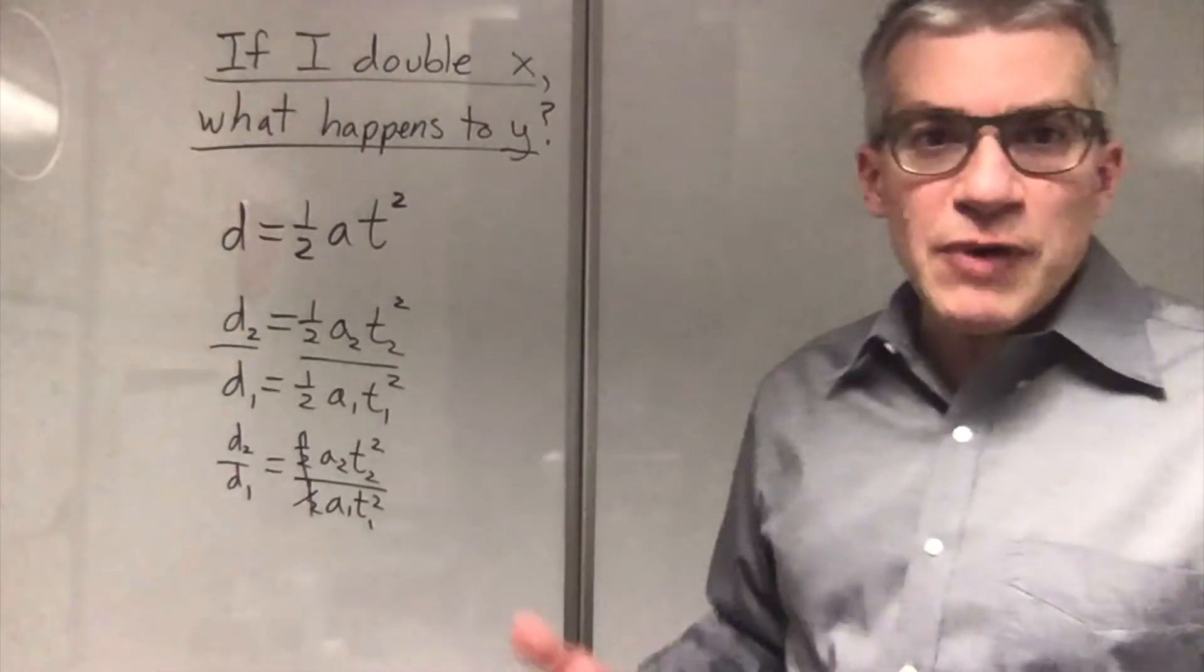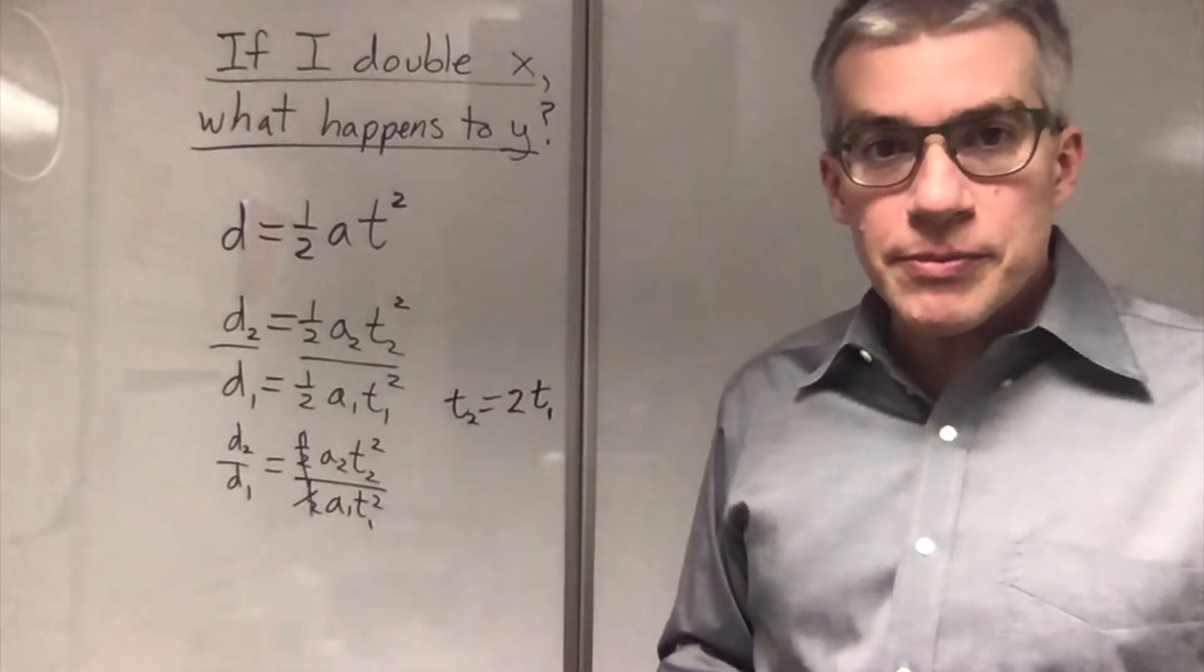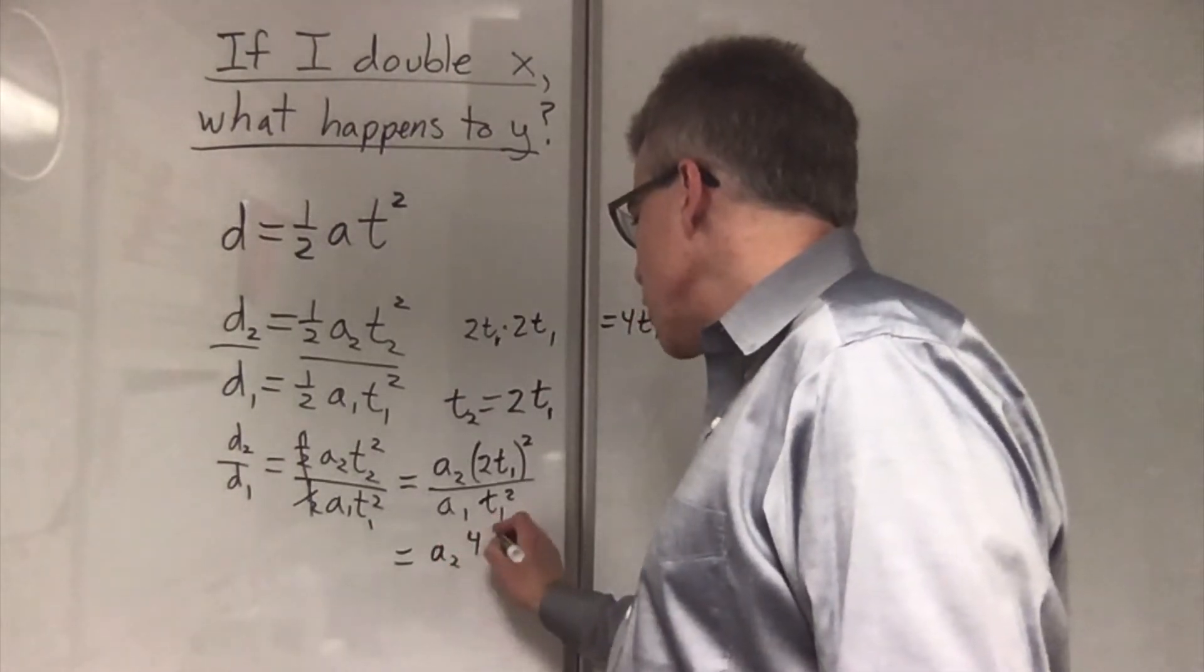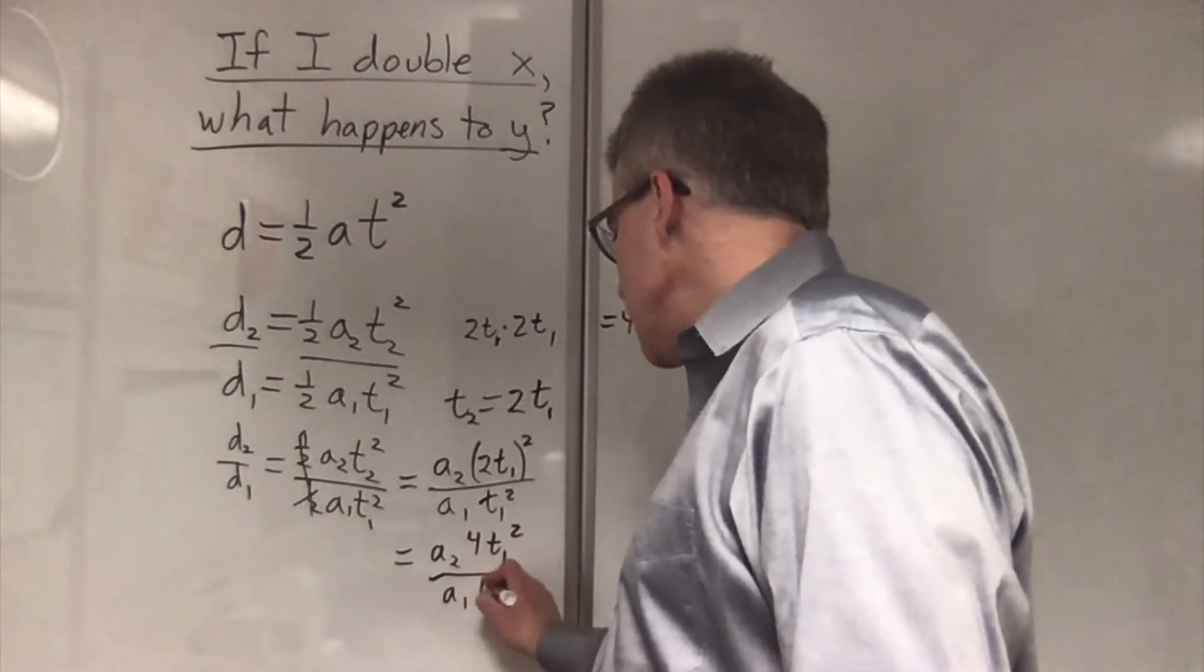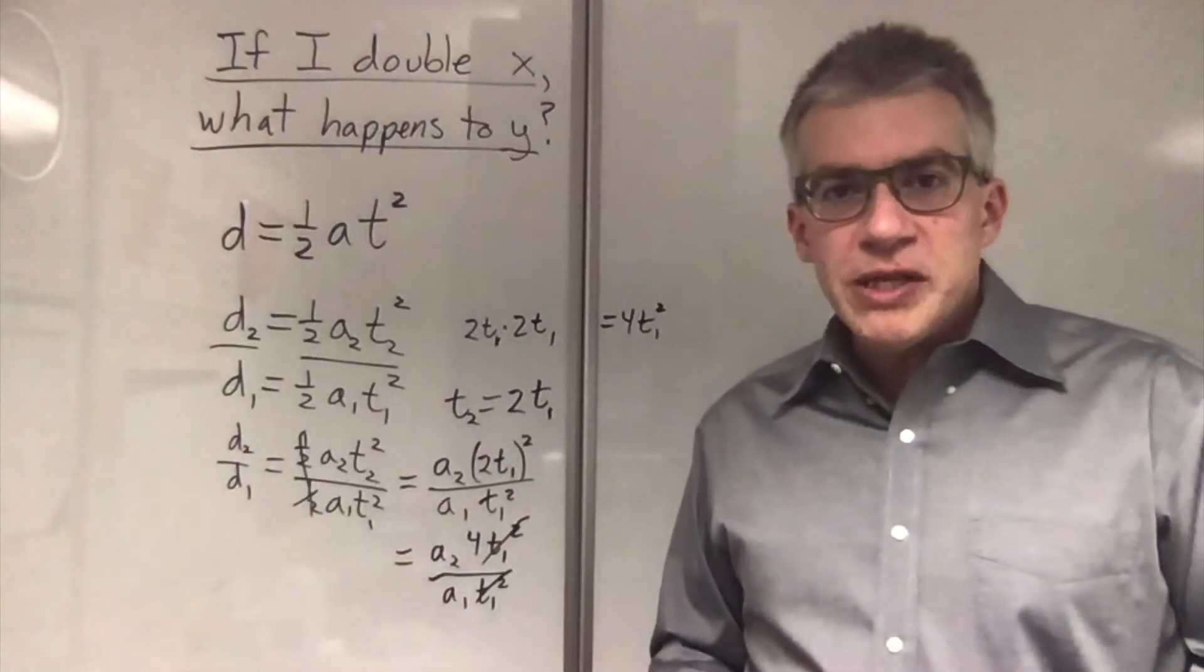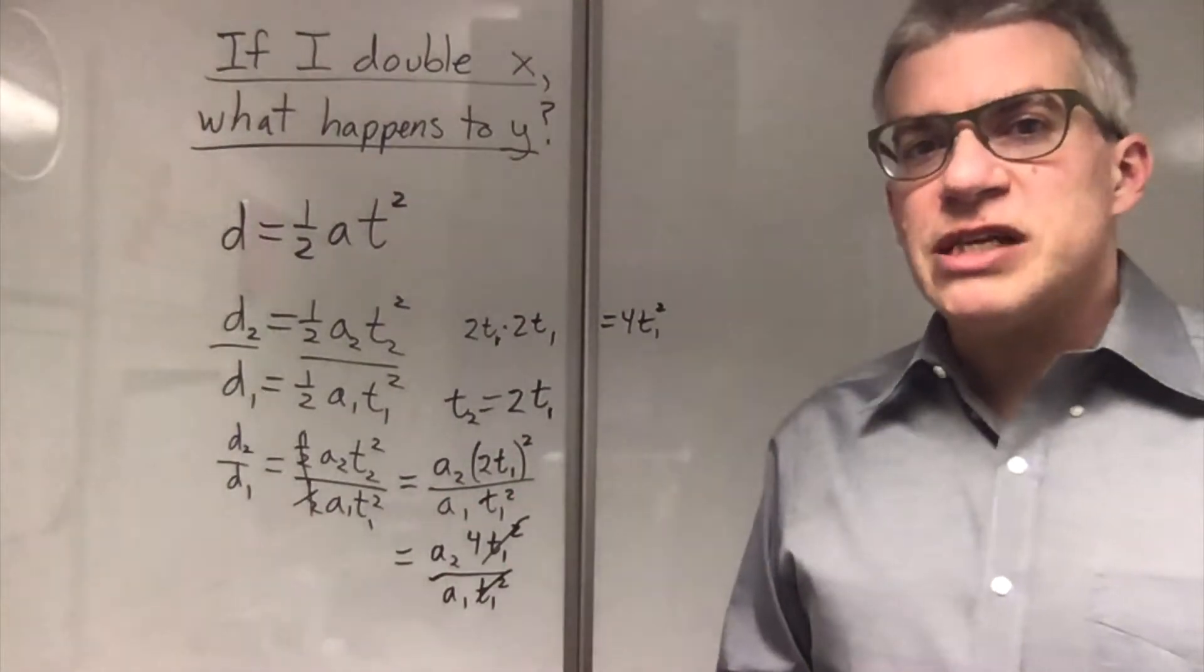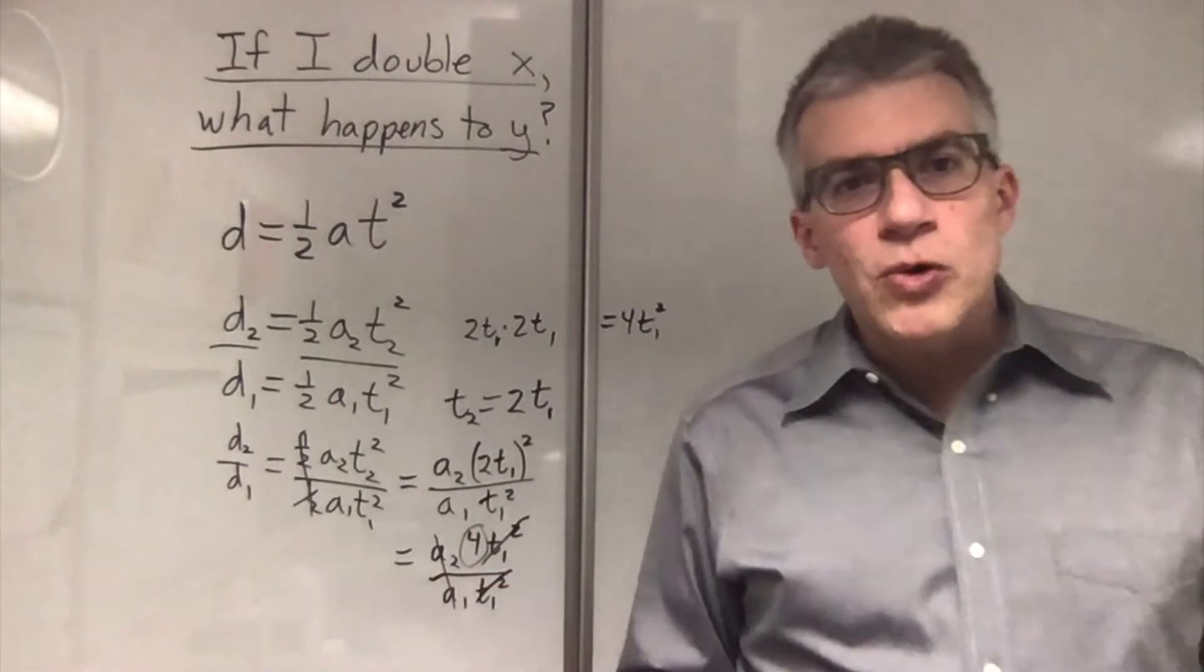If they say, what happens if I double the time? That means that t2 is 2t1. We have a2, 4t1 squared over a1, t1 squared. And the t1 squared cancels out. Assuming that they were only talking about changing the time, then the accelerations are equal and they cancel out. And we get this number 4.